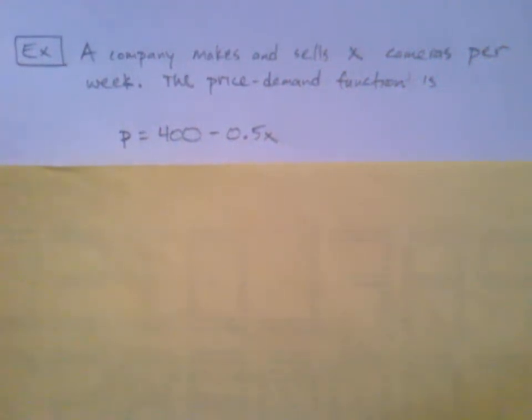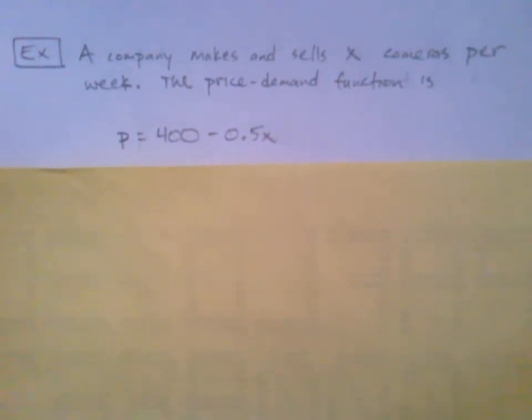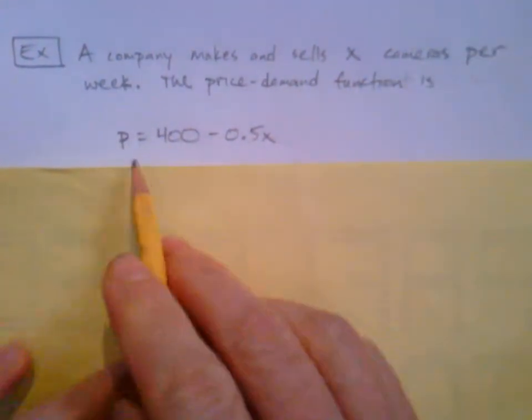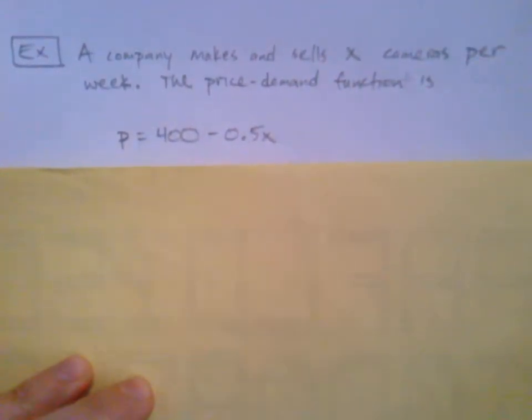This is an interesting one, builds on some discussions we've had about price demand. Here's the example: a company makes and sells X cameras per week. The price-demand function is P equals 400 minus 0.5X.